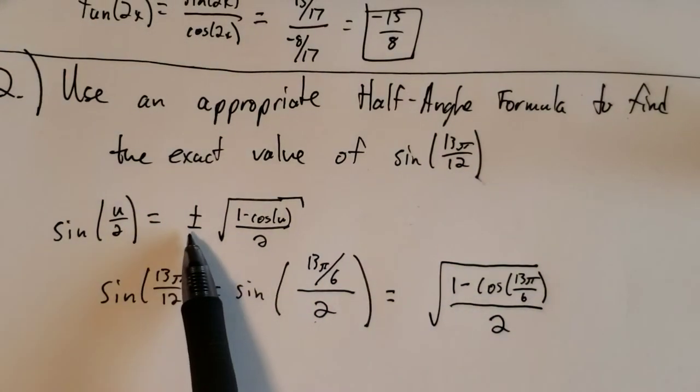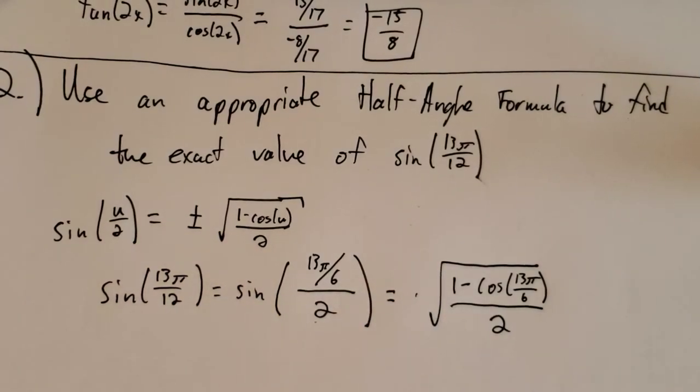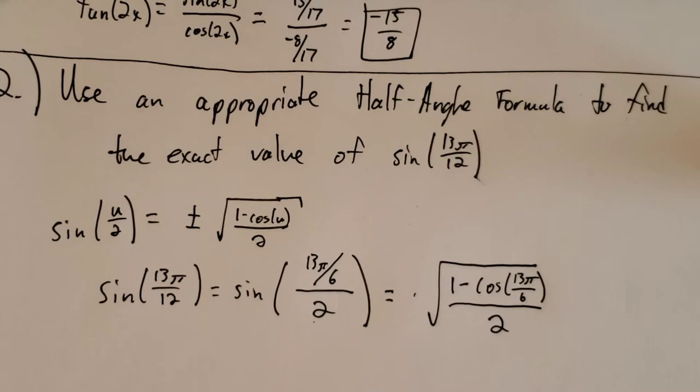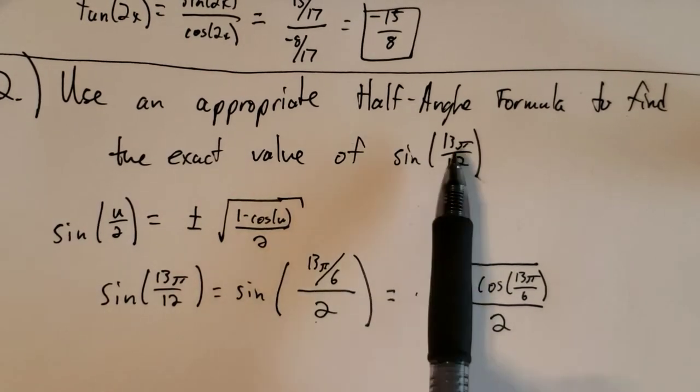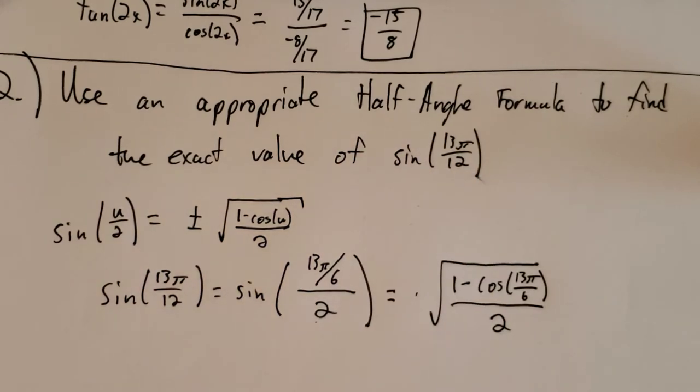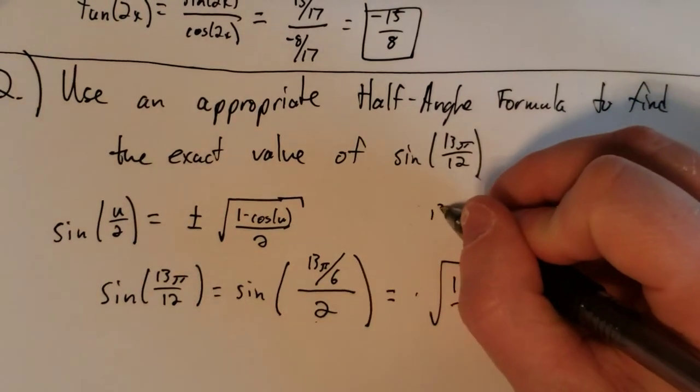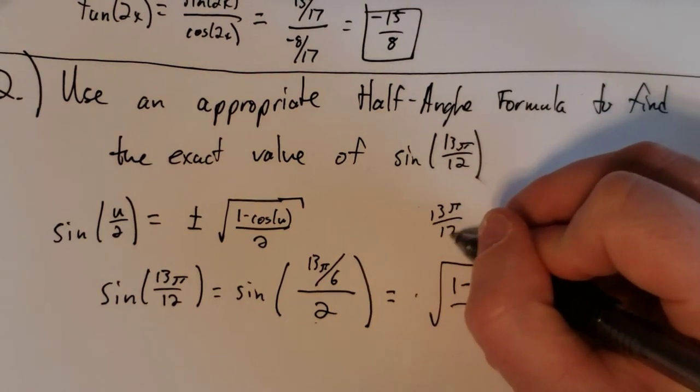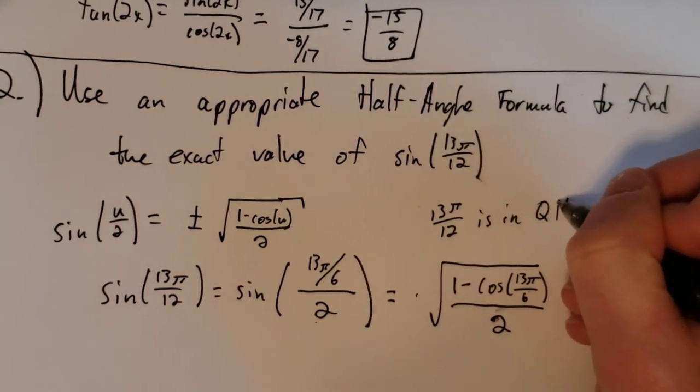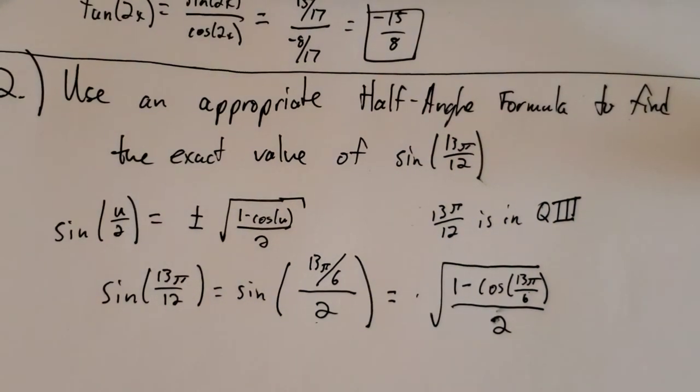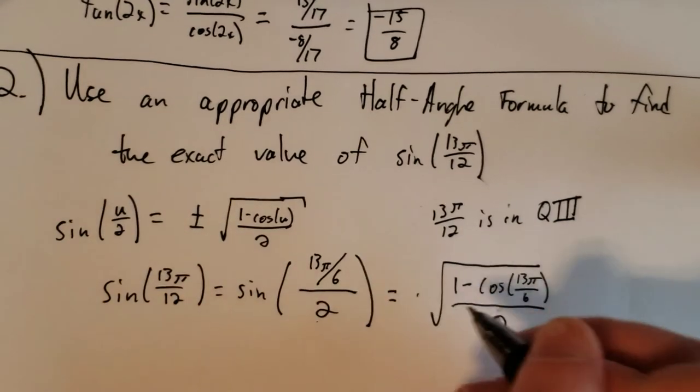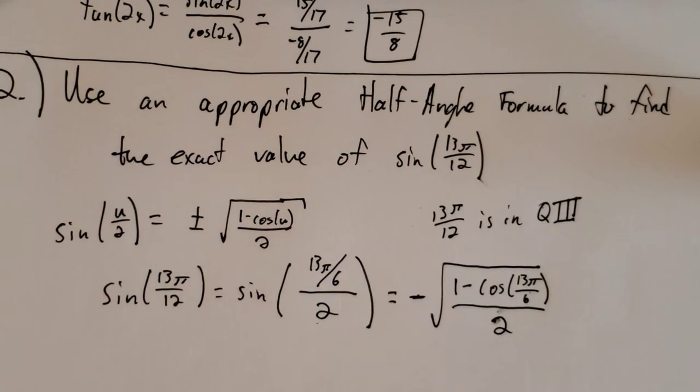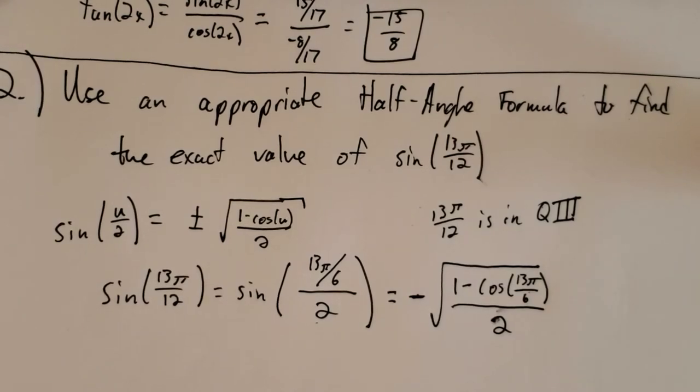Now notice that this had a plus or minus here, so we need to pick one, either plus or minus. But we have information to tell us which one that is. We don't just pick one randomly. So we're trying to find sine of 13 pi over 12. Well, 13 pi over 12 is in quadrant 3. So in quadrant 3, sine is negative. So this should be a negative square root of 1 minus cosine of 13 pi over 6 all over 2.